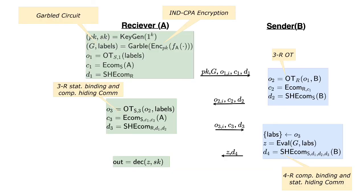This is our four-round protocol that is secure against explainable adversaries. Recall that the receiver is unbounded while the sender is bounded. On top of the garbled circuit, the protocol uses a three-round distinguisher-dependent OT, a three-round statistical binding and computational hiding commitment scheme, and a four-round computational binding and statistical hiding commitment scheme. I would like to point out that instead of garbling the circuit corresponding to function f, the receiver garbles the circuit that computes the encryption of the output of the function. In the next slide, we will see why this is the case.